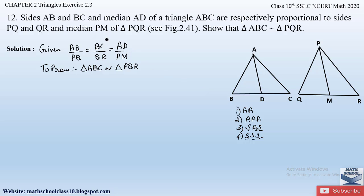Since we are given AB/PQ = BC/QR = AD/PM, we will consider triangles ABD and PQM and first prove these two triangles are similar. Once we establish that, we can then prove triangle ABC is similar to triangle PQR. So let us write: consider triangles ABD and PQM.